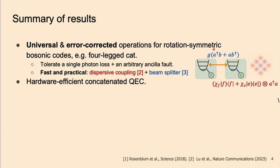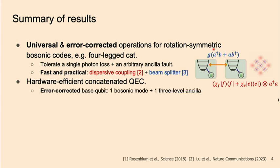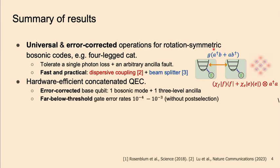These constructions will lead to a hardware-efficient concatenated quantum error correction scheme. In particular, we'll have a fully error-corrected base qubit that uses only a single bosonic mode and a three-level ancilla, which features the hardware efficiency of bosonic error correction even in the full fault-tolerance setting. We expect that the gate error can be in the range of 10^{-4} to 10^{-3}, which is far below the threshold for a second-level code such as the surface code.